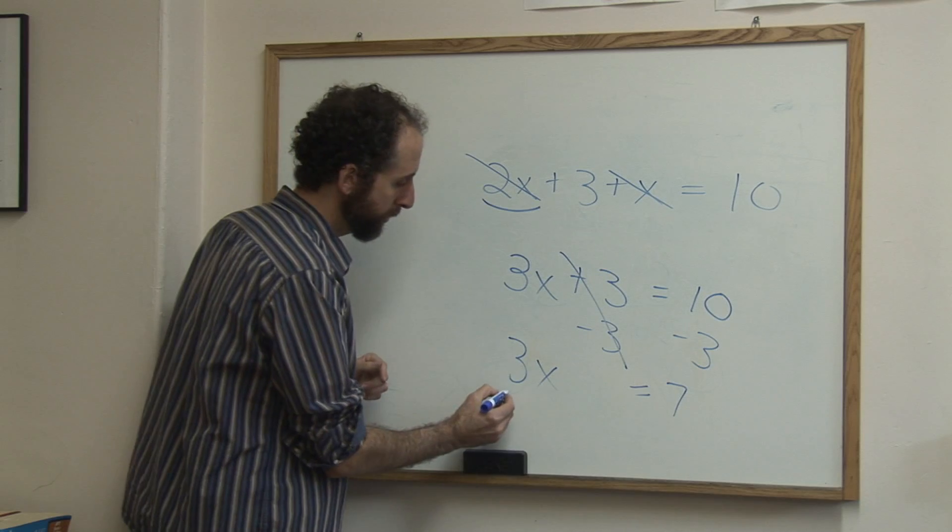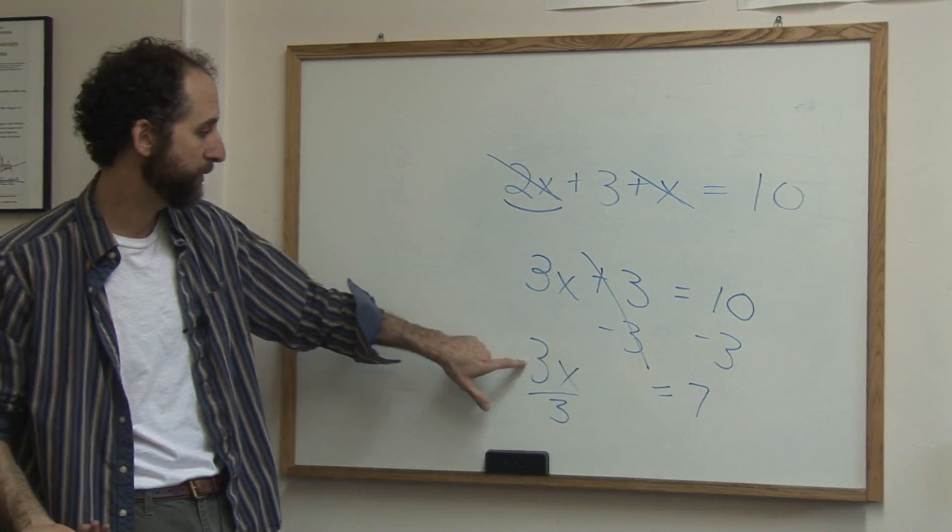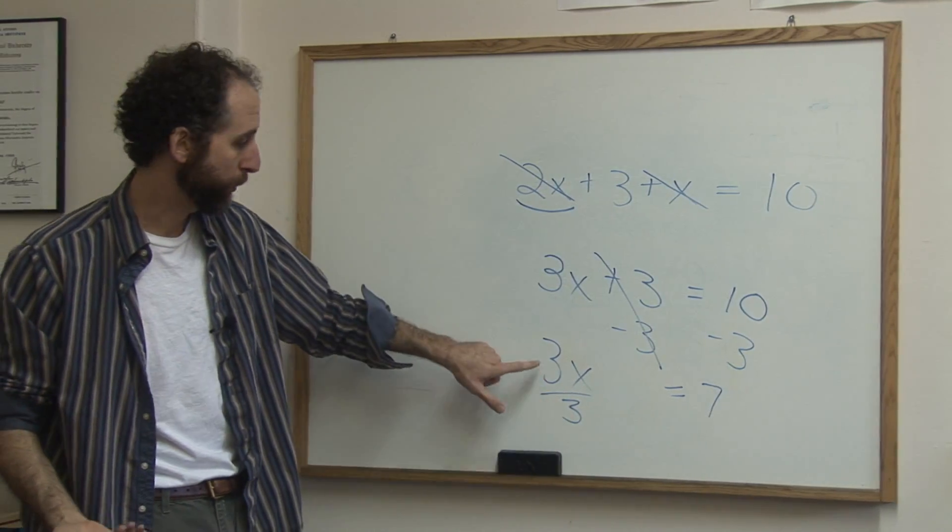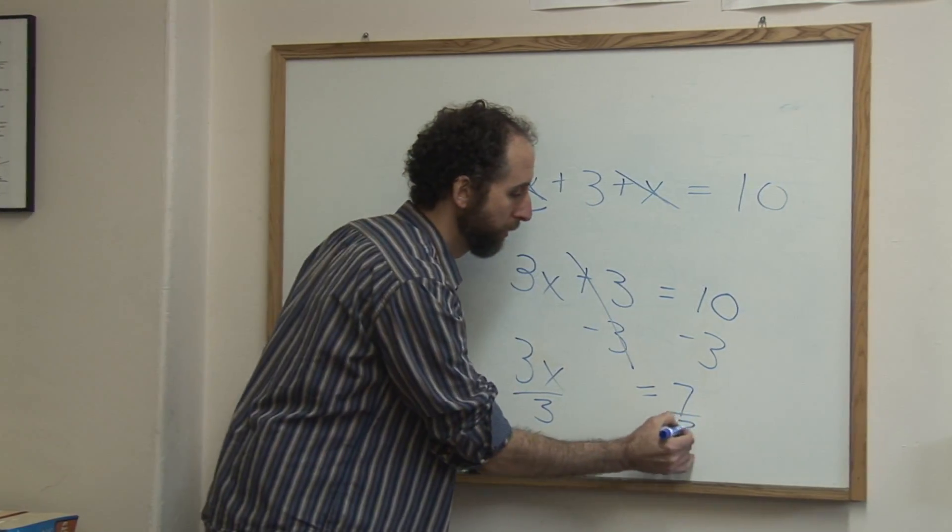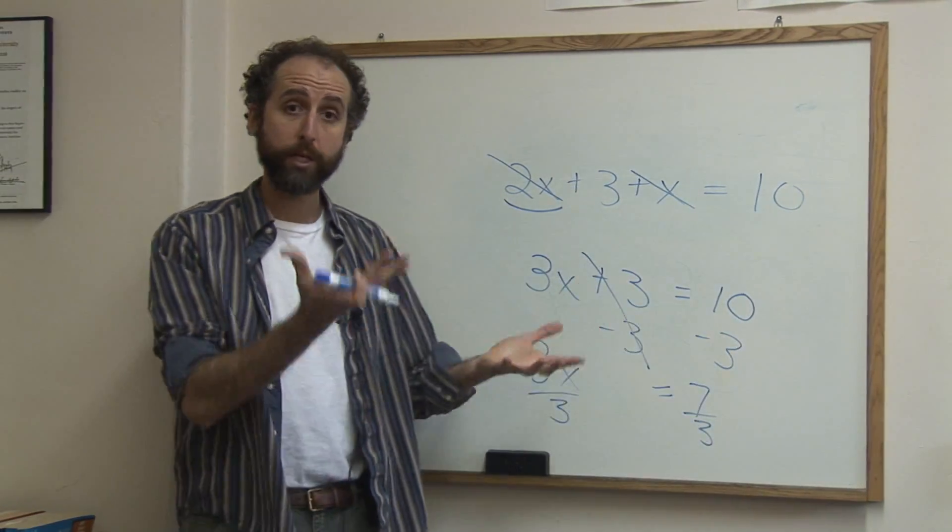We still want x alone, so we're going to divide by 3. Because the opposite of 3x really means 3 times x, and the opposite of times is divide. So we're going to divide both sides by 3. The only reason we do it to both sides is whatever you do to one side, you have to do to the other to keep the equation balanced.